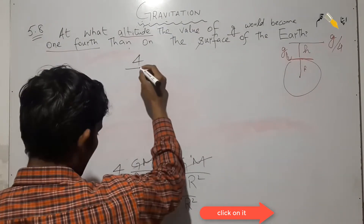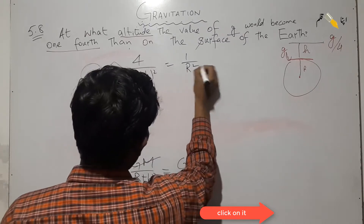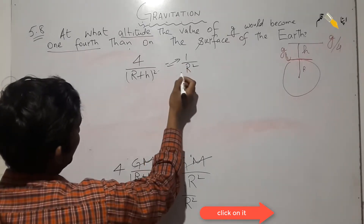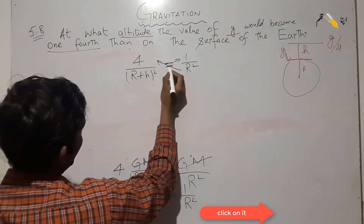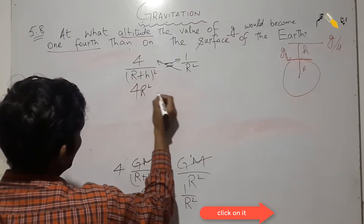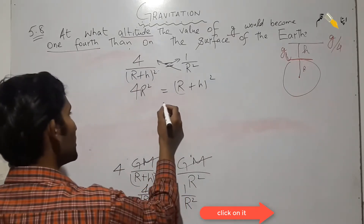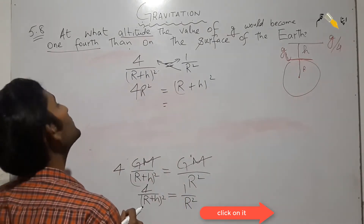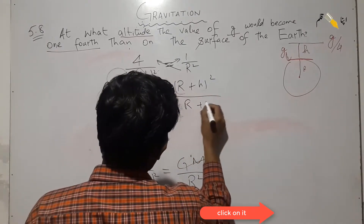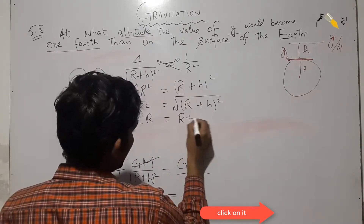So we have 4 over (r + h) squared equals 1 over r squared. By cross multiplication, we get 4r squared equals (r + h) squared. Taking square roots on both sides, we have 2r equals r plus h.